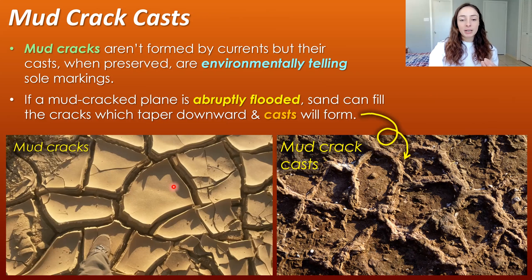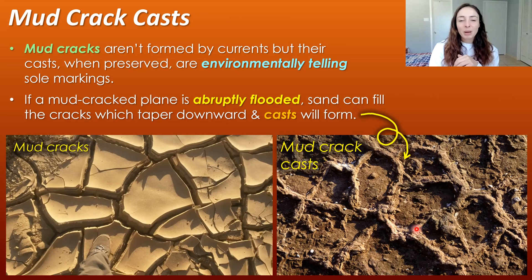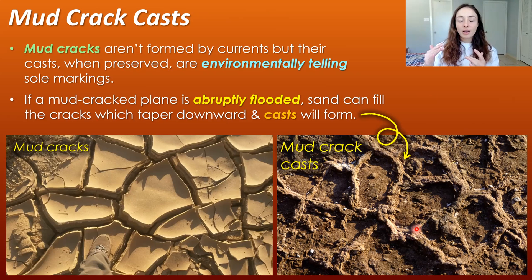Mud cracks typically taper downward, so the casts also have a point at the end, though that often weathers away into a more blunt preservation — which is why they're not super commonly preserved. When they are preserved, they can resemble bioturbation like worm burrowing, but you can tell the difference: mud crack casts are typically more angled and polygonal, whereas bioturbation is curvy and random.